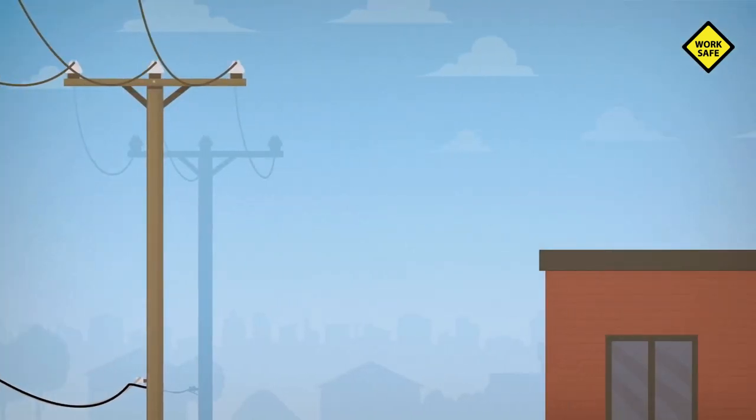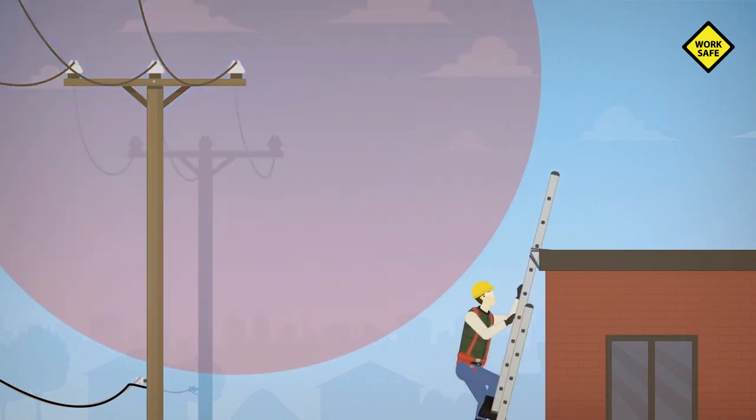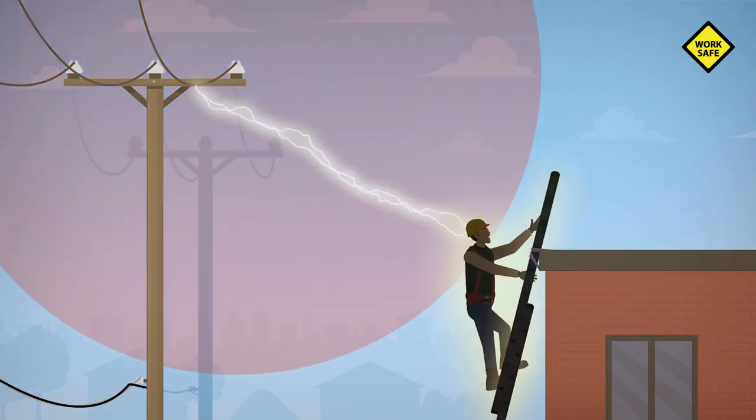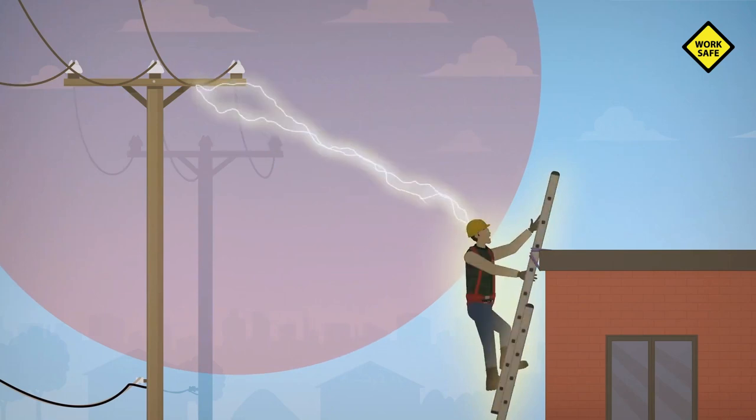Overhead power lines might seem harmless, but they're extremely dangerous. If you get within 3 meters, electricity can arc through the air between the lines and your body and kill you without any direct physical contact.